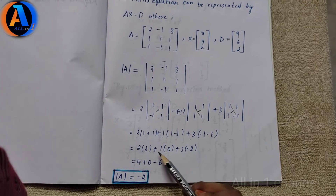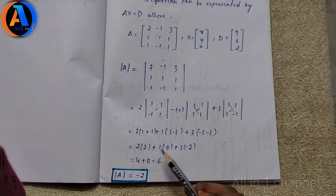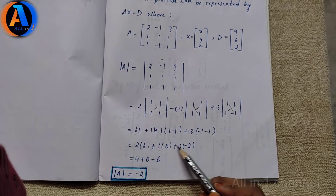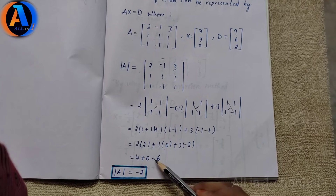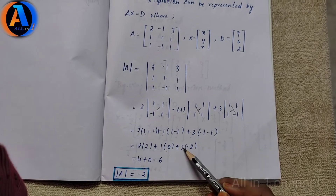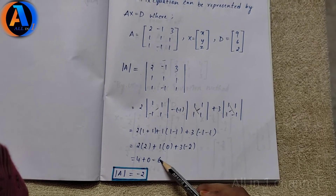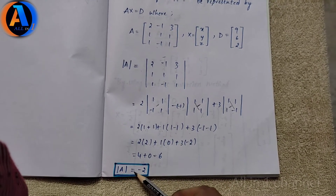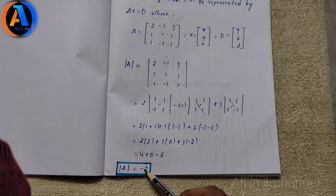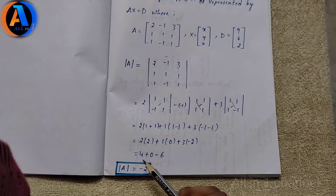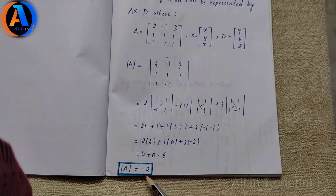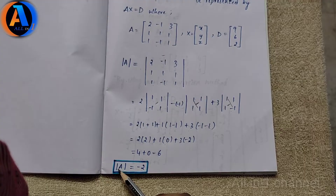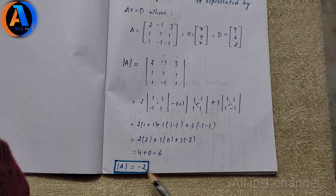Computing: 2 into (1×1 minus 1×(-1)) = 2 into 2 = 4. Minus (-1) into (1×1 minus 1×1) = minus(-1)(0) = 0. Plus 3 into (1×(-1) minus 1×1) = 3 into (-2) = -6. Therefore det(A) equals 4 plus 0 minus 6 equals minus 2. Since det(A) is not equal to 0, matrix A is non-singular.